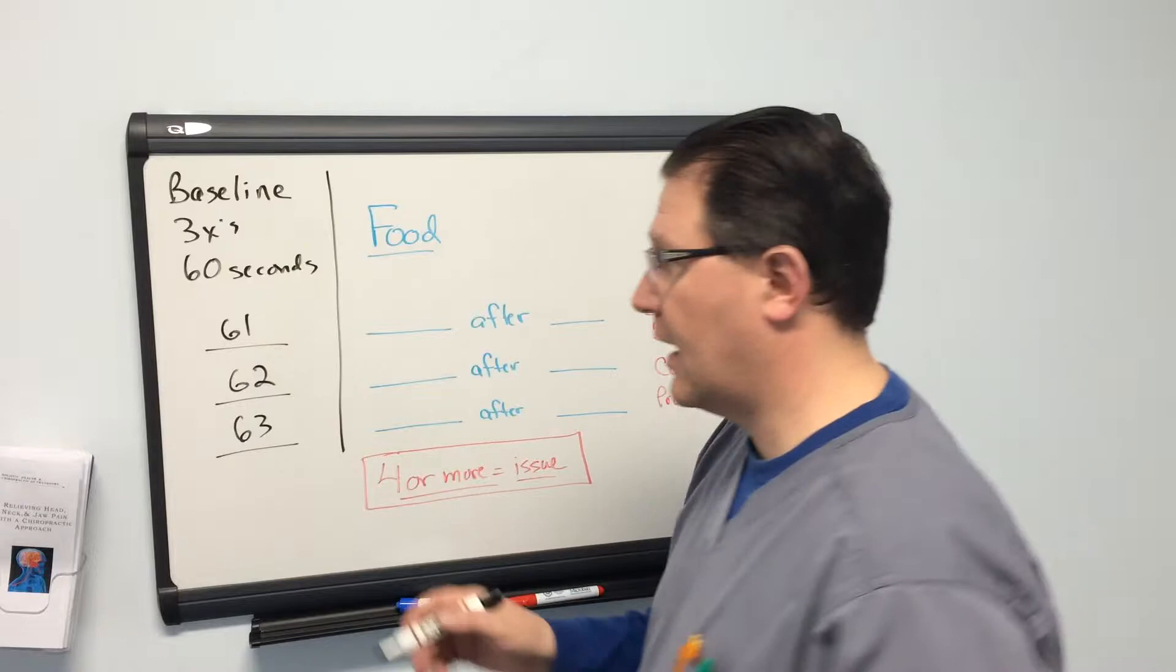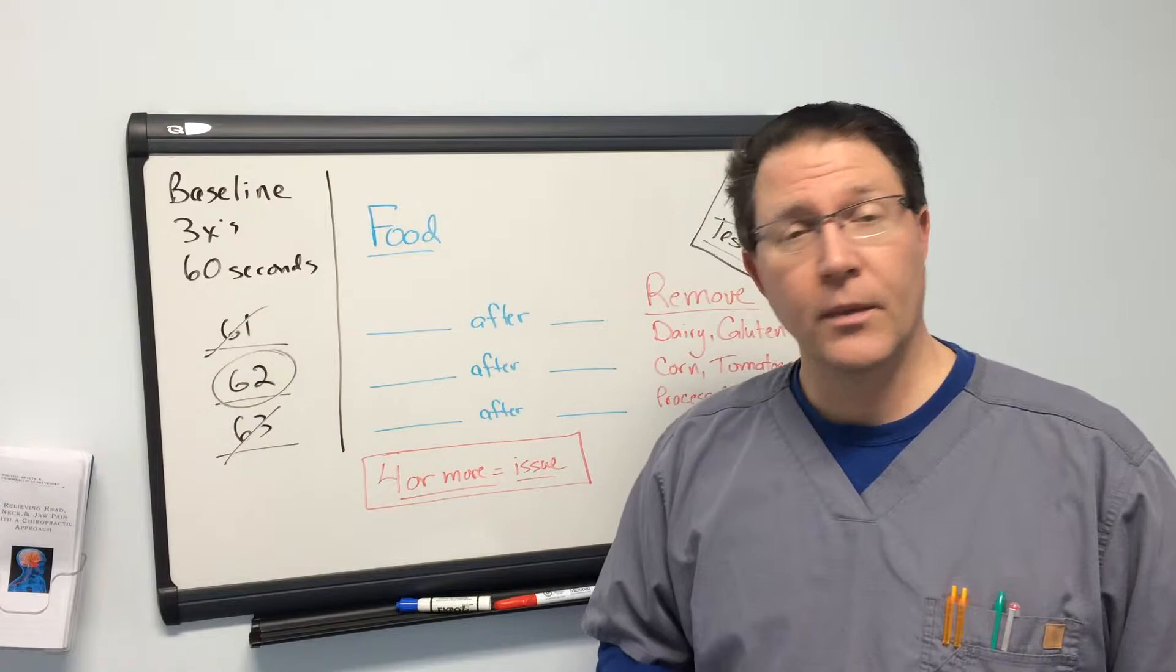What we're going to do is we're going to throw out the low, the high, and we're going to take the average. So we're going to throw out the low, throw out the high, and our average is 62. That's our baseline.